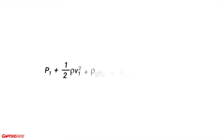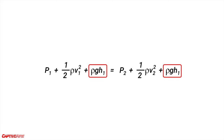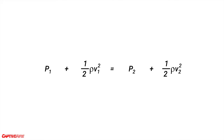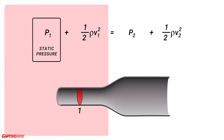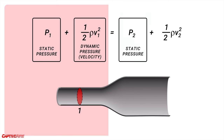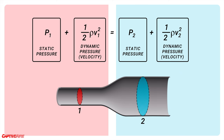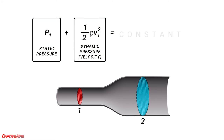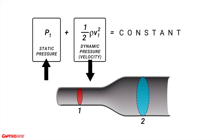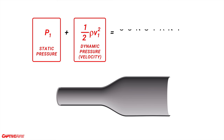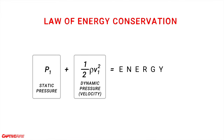Let's look at Bernoulli's equation to understand more. Ignoring some terms for now, the equation says that at any point in the pipe the sum of the static pressure and the velocity of the fluid equals the sum at any other point — meaning this sum is always constant along the pipe. If static pressure increases, velocity must decrease and vice versa. You can think of each term as a measure of part of the energy in the system, and since energy is conserved, it remains the same at any point. This is why Bernoulli's equation is also called the law of energy conservation.